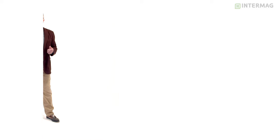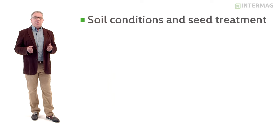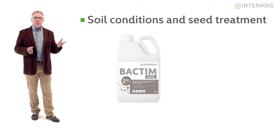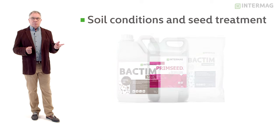To conclude, basically we have two steps in success in improvement of conditions of root growth and development. The first step is related to improvement of soil conditions and seed treatment. Here we have Bactim soil and Bactim terrastart and for seed treatment Primseed.